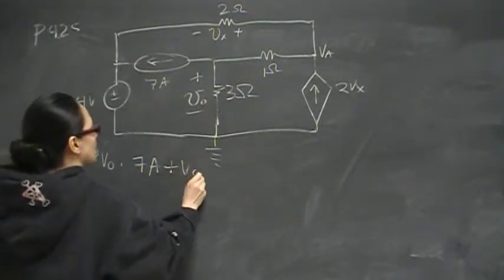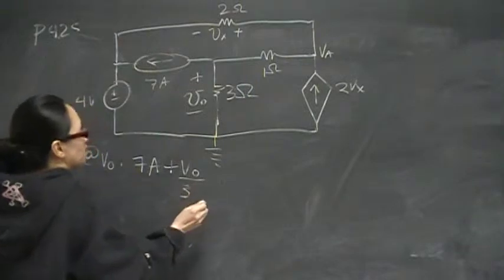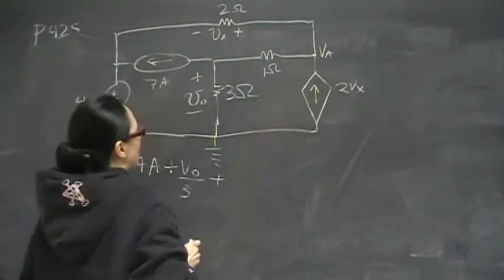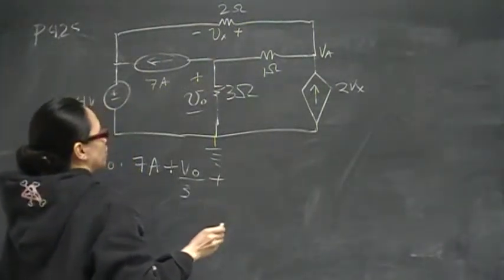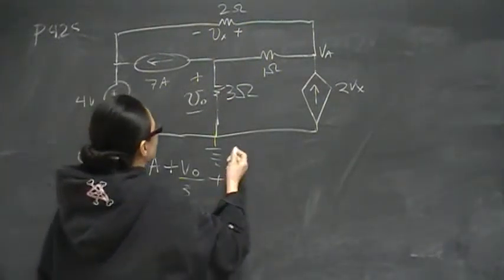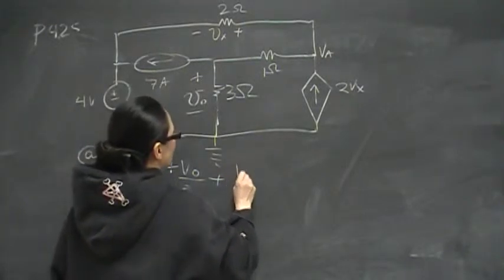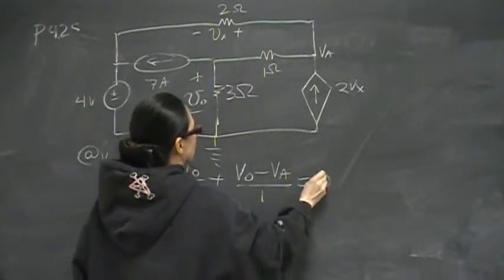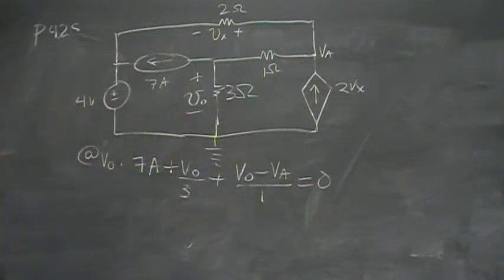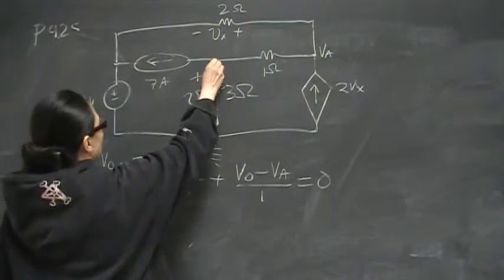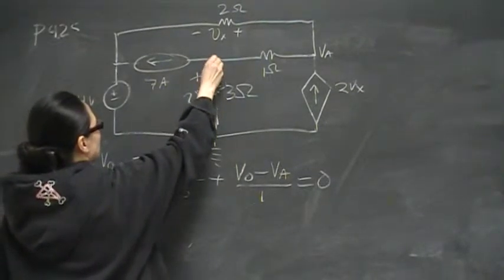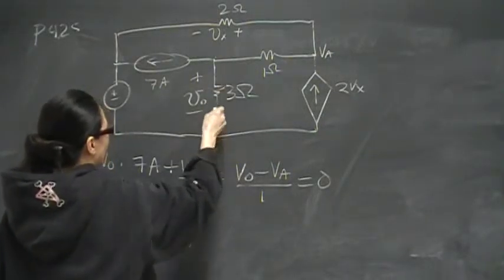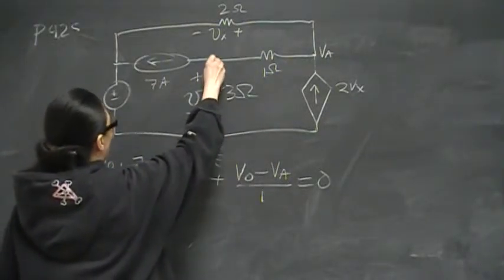So 7 amps plus Vout over 3, that's that node right here, plus Vout minus VA over 1. All of that has to equal zero by KCL. Now notice that here, I can call this Vout because Vout is going to be the difference between this node and this node, and this node is zero, so Vout minus zero is Vout.